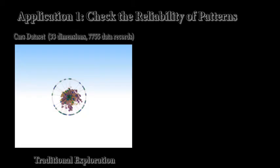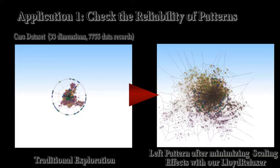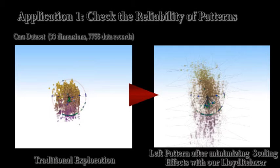Here you can see on the left an exploration that discloses interesting patterns of the data. On the right, the result for the process of minimizing the scaling effects is given. Surprisingly, a lot of structures vanish and turned out to be based on scaling effects. However, an amount of robust and reliable structures can still be found, which represents the data best.